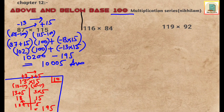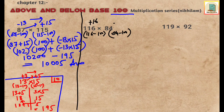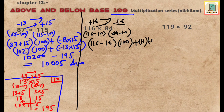Next question: 116 multiplied by 84. We find the deviation: 116 minus 100 gives plus 16, and 84 minus 100 gives minus 16. First number plus second deviation: 116 minus 16, multiplied by the base 100, plus deviations: 16 multiplied by minus 16. Since 16 multiplied by 16 cannot be done directly, we use the above base 10 method.